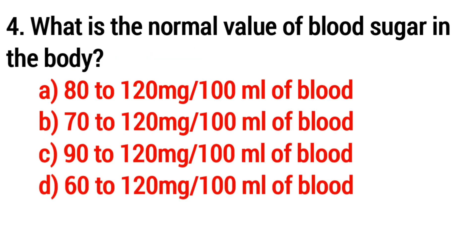Question number four: What is the normal value of blood sugar in the body? Answer: option A, 80 to 120 mg per 100 ml of blood.